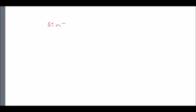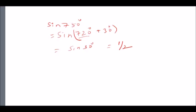Since 360° coincides with 0°, any multiple of 360° can be treated as 0°. For example, find sine 750°. The nearest multiple of 360° below 750° is 720°, so we write sine(720° + 30°). Treating 720° as 0°, we get sine 30° = 1/2. By following these basic rules, you can find the value of any trigonometrical ratio for any angle.